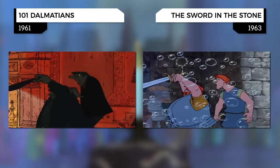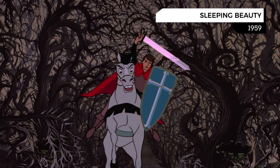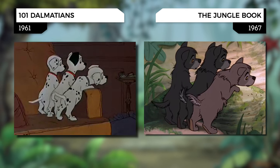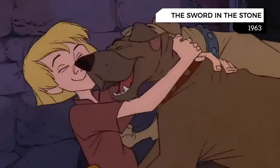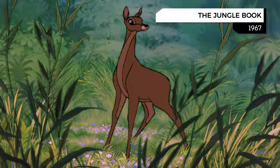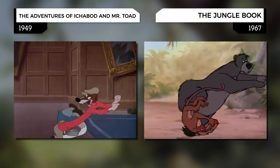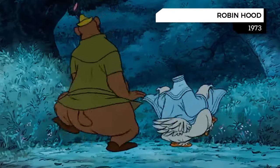The Sword in the Stone went absolutely nuts with the practice, using shots from Bambi, Goliath 2, 101 Dalmatians, Sleeping Beauty, The Truth About Mother Goose, and The Adventures of Ichabod and Mr. Toad — the same shot reused a few years earlier in Sleeping Beauty. The Jungle Book also heavily used this method. It copied the way the puppies walked in 101 Dalmatians for Mowgli's wolf siblings, and the deer in The Jungle Book is directly copied from Bambi. Even the original shots from The Jungle Book were later traced over for Robin Hood, particularly the dance scene between Baloo and King Louie.